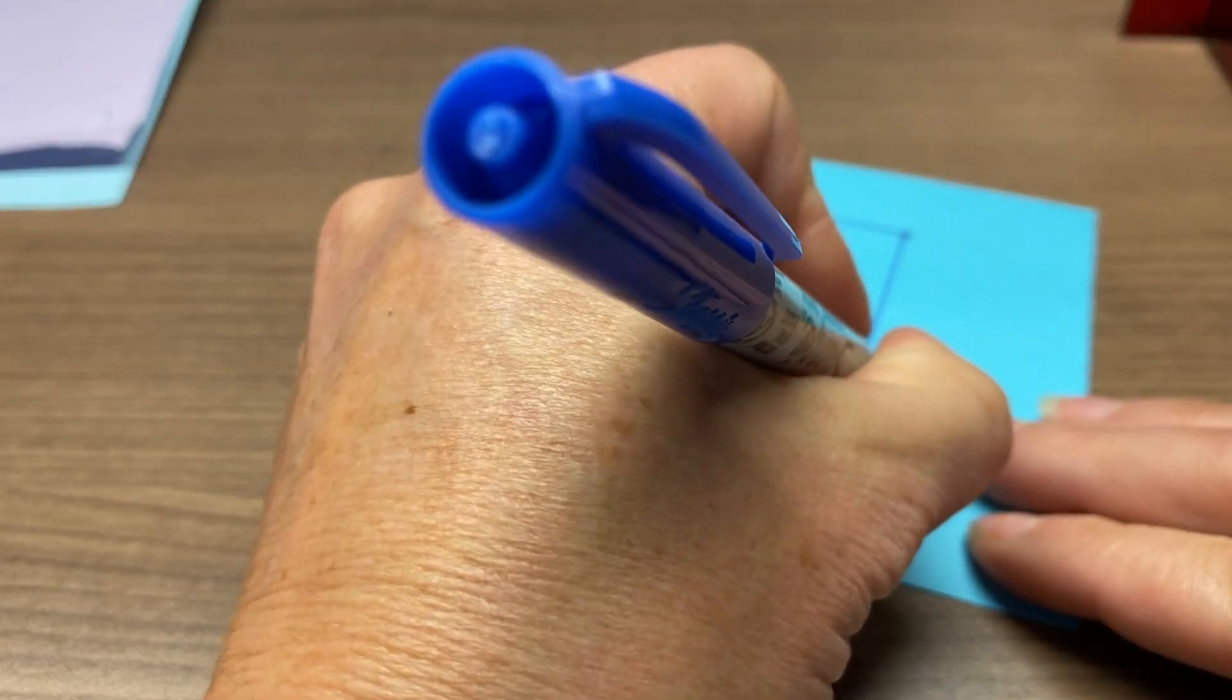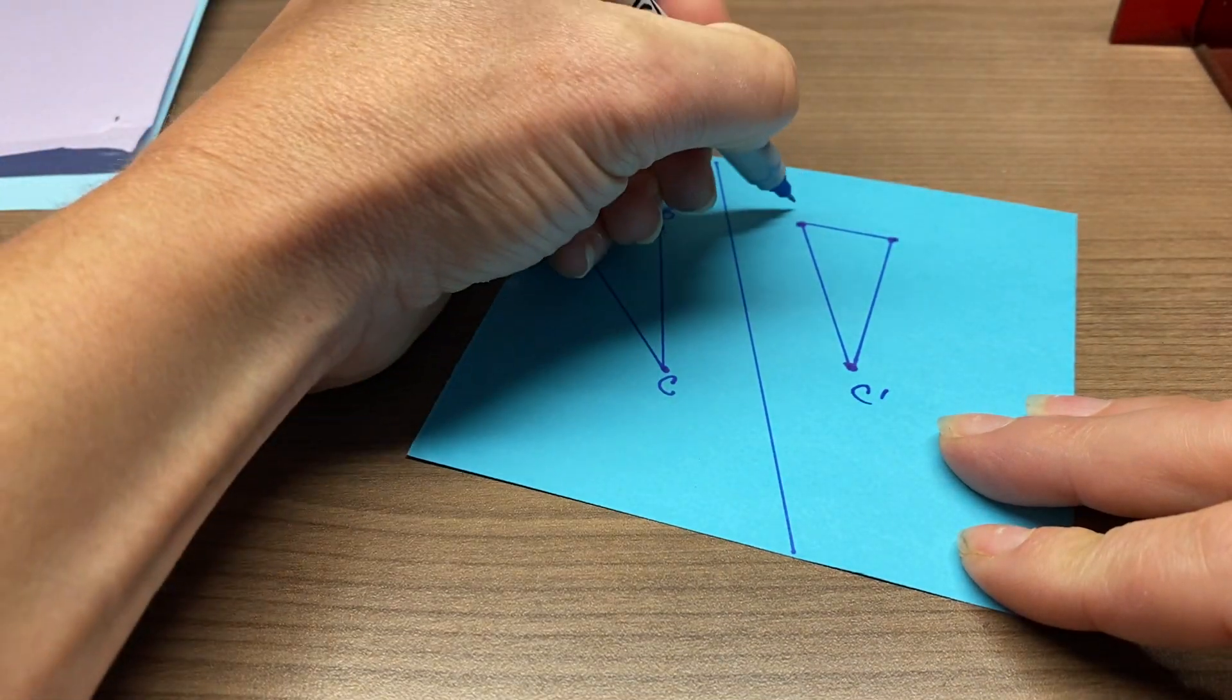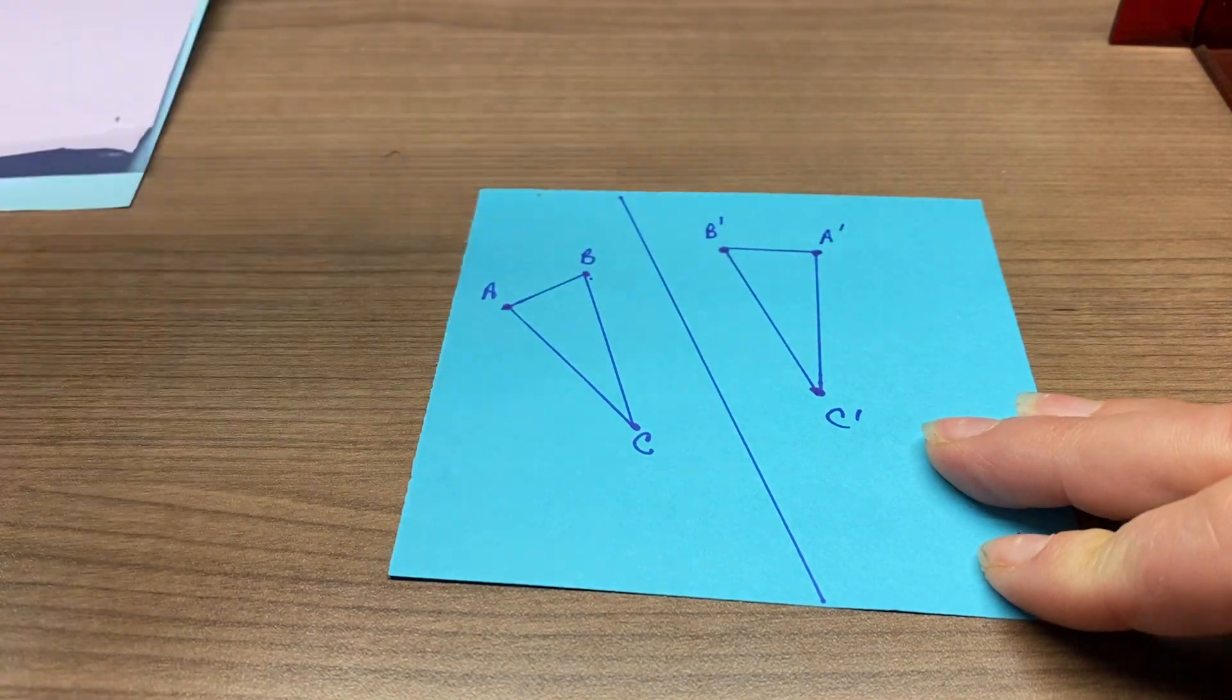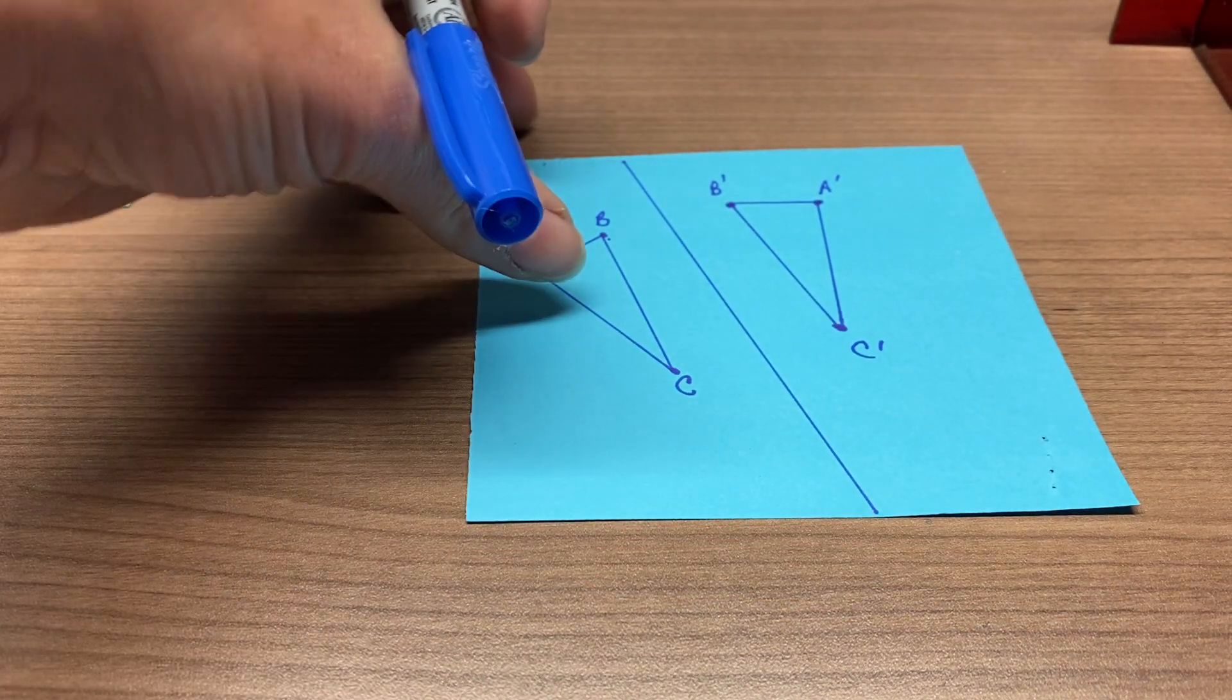And again, label them, which ones they were. B is closest to the line, so B' is closest to the line, and A' is farther away. There's your reflection.